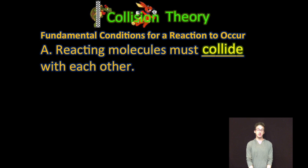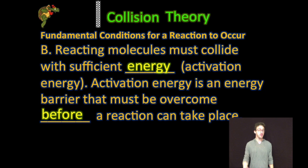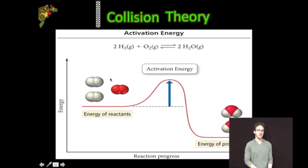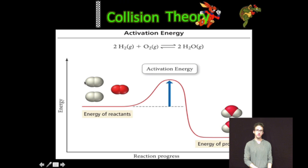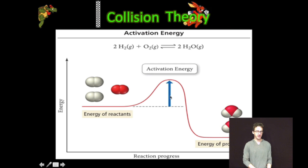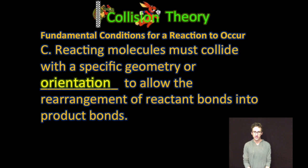All right, so first of all in order to have a reaction, molecules must collide with each other. However, they can't just collide, they have to collide with sufficient energy, what we call activation energy, which is just the energy barrier that must be overcome before a reaction can take place. Oftentimes we'll describe this idea in an energy profile. As you look at the original potential energy of our reactants, before they can react to form products they must have a certain amount of energy, activation energy, for the reaction to proceed from reactants to products. And two, reactant molecules must collide with a specific geometry or orientation to allow the rearrangement of reactant bonds into product bonds.